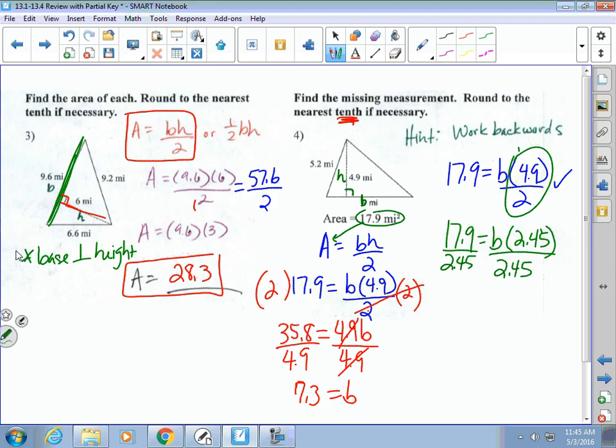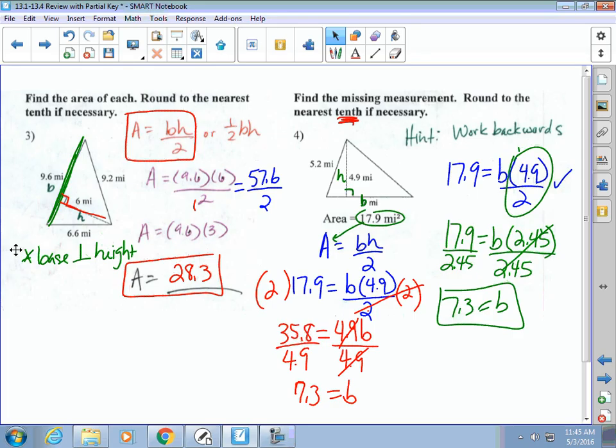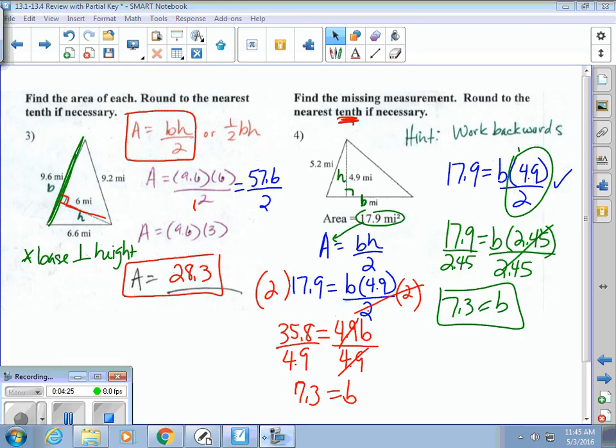And then there's my decimal. B would equal the same thing, 7.3. Okay, so I'm not going to say you have to do it one way. You just got to do whatever way you have to do it correctly. That takes care of the area of triangles. Thank you for that.